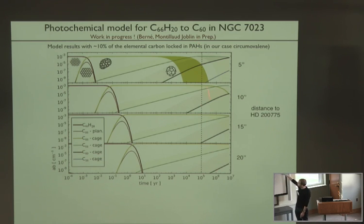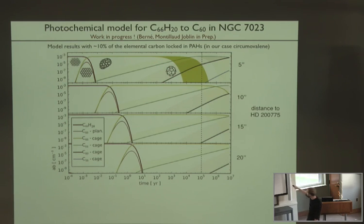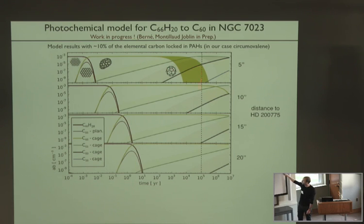The vertical line here indicates the estimated age of the nebula. The shaded regions indicate the range of values corresponding to the range of pre-exponential factors put in the model. The solid lines represent the most pessimistic case and the upper region of the shaded area is the most optimistic case. Basically, it is relatively difficult to form C60, but on a timescale of 10^5 years, when you are close to the star you do start to have reasonable abundances of the C60 molecule using this mechanism.